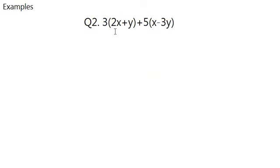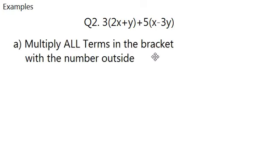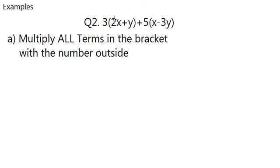So in question 2, it's 3 bracket 2x plus y, then plus 5 bracket x minus 3y. The bracket means multiply. So what do you do now? To do this, you first have to multiply the terms in the bracket with the number outside, which is basically just 3 times 2x plus y, and 5 times x minus 3y. And you do it for each term. And I repeat, it's each term inside the bracket.